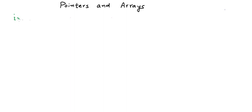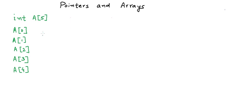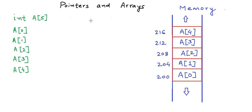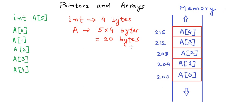When we declare an integer array A of size 5, we create five integer variables named A[0], A[1], A[2], A[3] and A[4]. These five integers will be stored in memory as a block of five consecutive integers. If A[0] is stored at address 200, and in a modern compiler an integer is stored in four bytes, then A[1] will be at 204, A[2] at 208, A[3] at 212, and A[4] at 216. The overall size of the array would be 20 bytes in one consecutive block.